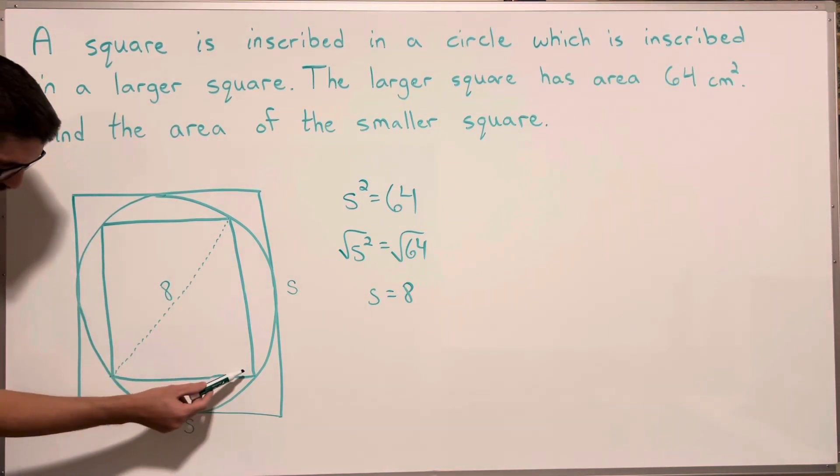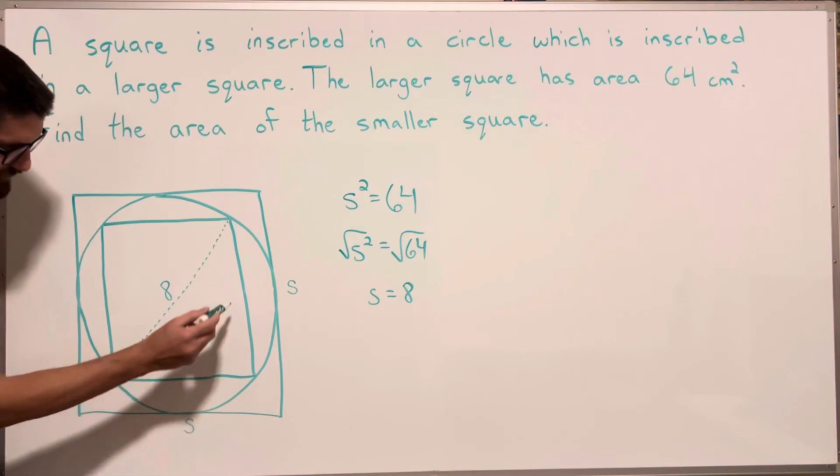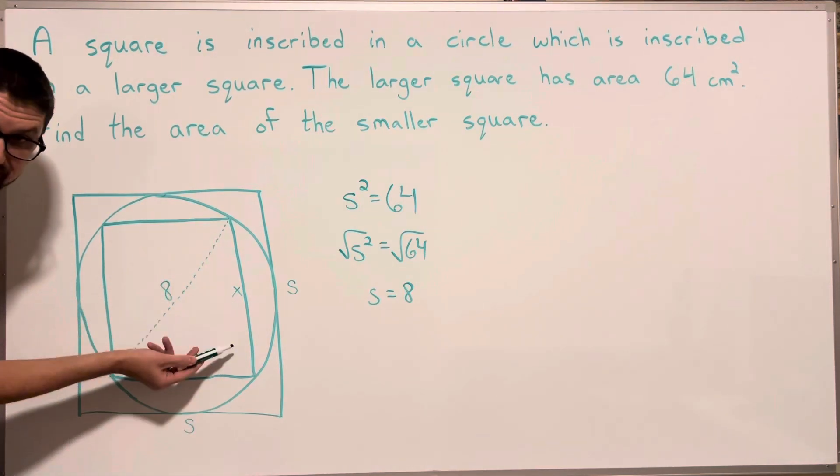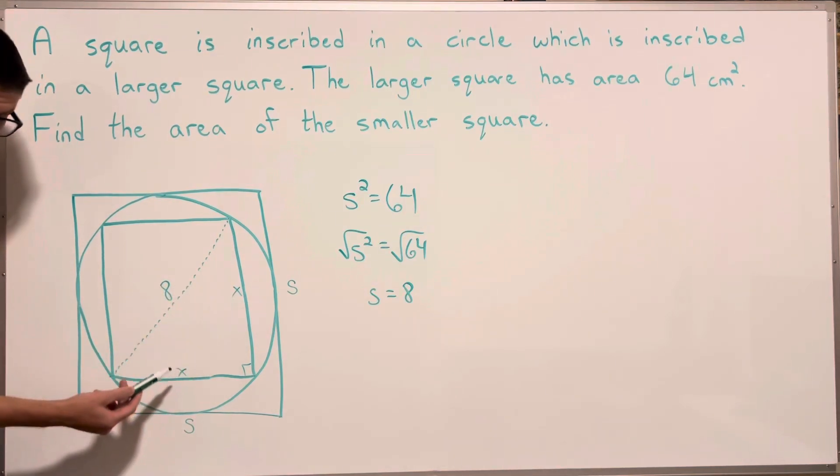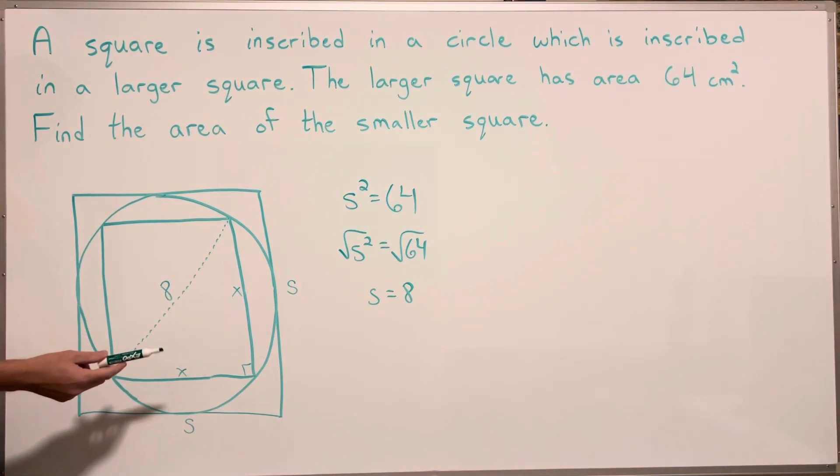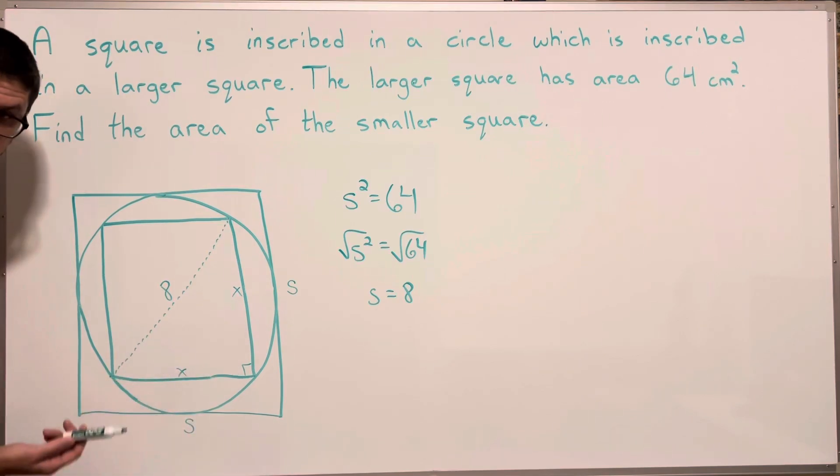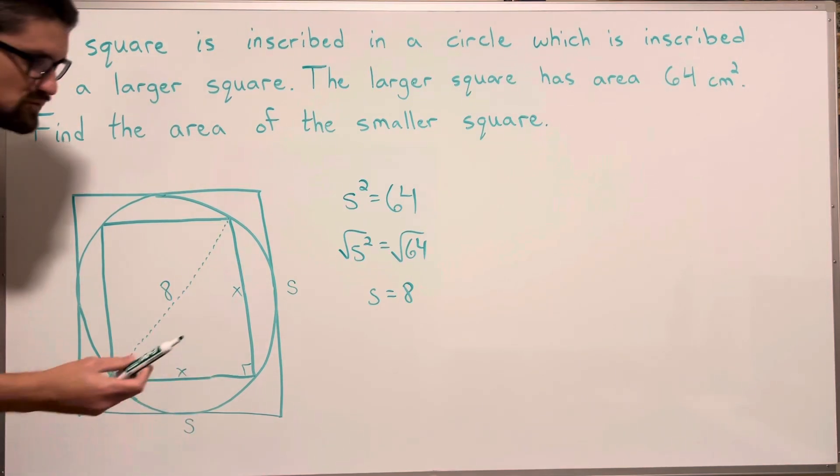Now the area of the smaller square, if we let the inside distance here be x and this be x, it's a right triangle. So I can do the Pythagorean theorem and get the side of the smaller square.